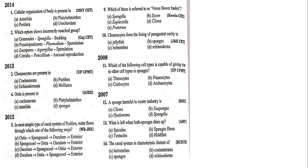Moving to previous year questions. In 2014, this was asked: cellular organization of body is present in which phylum? Obviously Porifera, because Annelida, Platyhelminthes, and Urochordata all have organ and organ system level of organization. So the answer is Porifera.